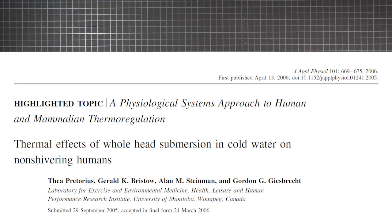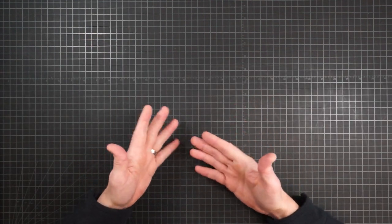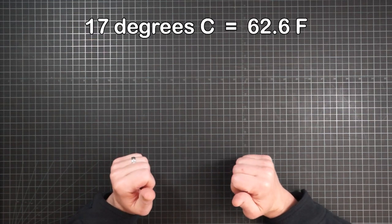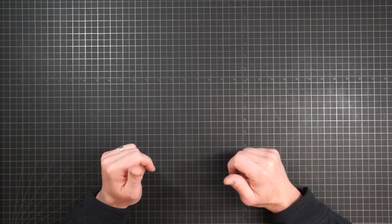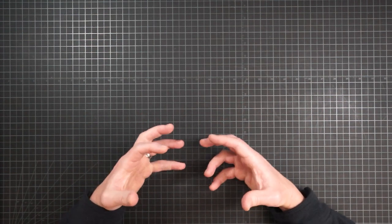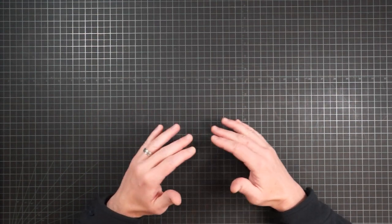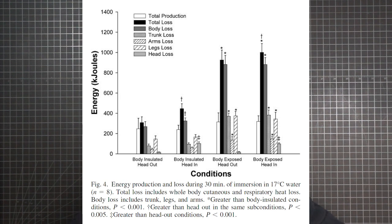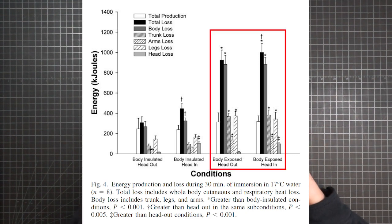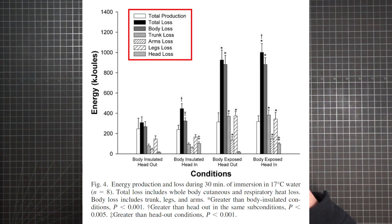So that study is the thermal effects of whole head submersion in cold water on non-shivering humans published in the journal of applied physiology in 2006. Basically what researchers did was dunk a series of test subjects in 17 C water with sensors placed on various parts of their heads and bodies. As the subjects responded to the cooling effects of submersion, the sensors allowed measurements of both energy production and loss by region of the body. Figure four shows some of the results. In order to see what role the head played in heat loss, four conditions were tested. With bodies insulated, subjects were submerged in two ways, one with heads out and again with heads underwater. Then head in and head out were tested again, this time with the bodies uninsulated.